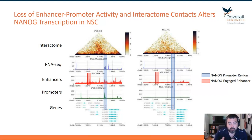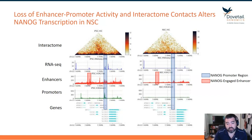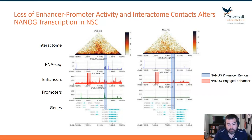In green below that, we have H3K4 trimethylation data, which marks active promoters. And then below that, we have the genes. What I've done in the blue box is called out where the NANOG promoter lives.